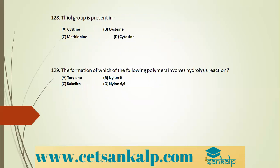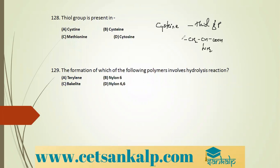Q: Anionic detergent among the options: sodium lauryl sulfate (option A) is an anionic detergent; option B is a cationic detergent. Q: Thiol group is present in the amino acid cysteine. Cysteine structure: CH2(SH)–CH(NH2)–COOH. The –SH group is the thiol group.